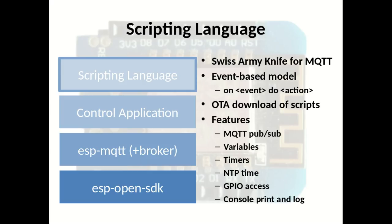From the control application you can do an over-the-air download of scripts, meaning once you have flashed the ESP micro MQTT broker you don't need to do any flashing actions anymore. You can configure and provide scripts via the over-the-air interfaces. The scripting language features include MQTT publish and subscribe, publishing to remote brokers, subscribing to your own broker, variables, persistent variables stored in flash to preserve state over reboots, timers, NTP time access when connected to the internet, local GPIO input/output access, and print/logging commands to the console.